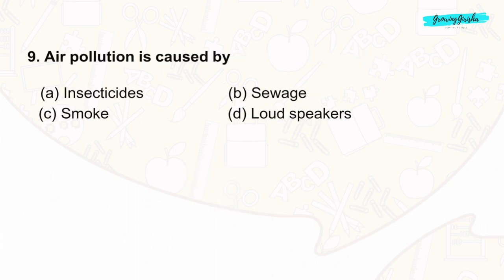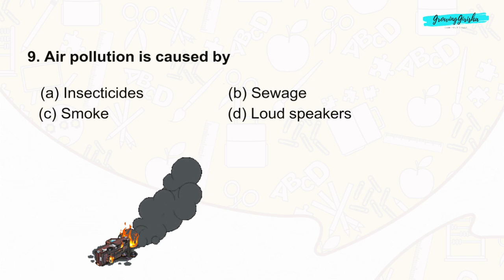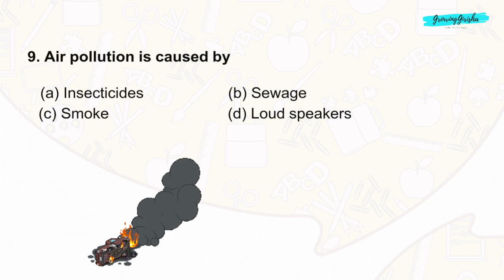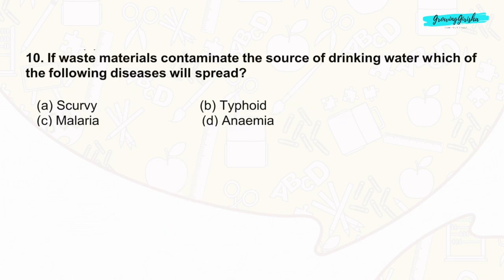Question 9: Air pollution is the presence of harmful or undesirable substances in the earth's atmosphere that have negative effects on human health, the environment, or the climate. These substances include pollutants such as particulate matter, gases, volatile organic compounds, and smoke. The correct answer is option C.